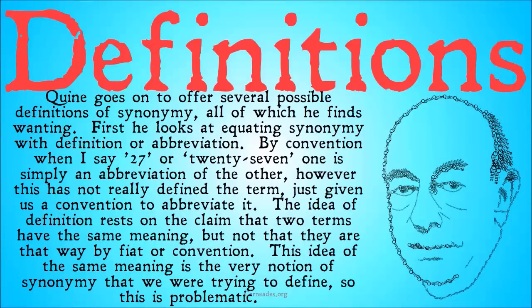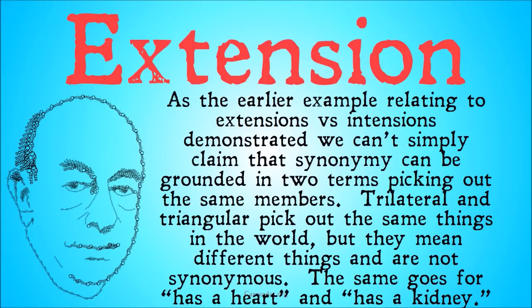Basically, what he's trying to discard here is the idea that we can just refer to replacing one thing with another in a particular situation. We have to have a deeper idea of meaning. As the earlier example relating to extensions versus intensions demonstrated, we can't simply claim that synonymy can be grounded in two terms picking out the same members in the world. 'Trilateral' — having three sides — and 'triangular' — having three angles — pick out the same things in the world, namely triangles, but they mean different things and are not synonymous. The same goes for 'has a heart' and 'has a kidney'. Just because something picks out the same objects in the world doesn't mean that it means the same thing in the way that 'bachelor' and 'unmarried man' mean the same thing.